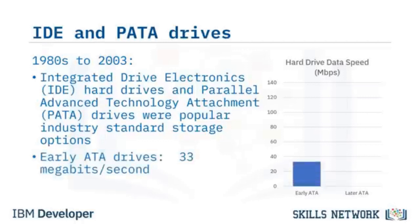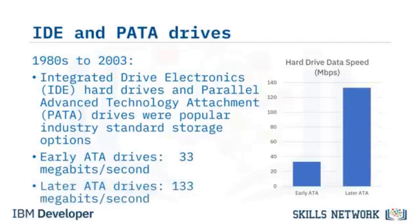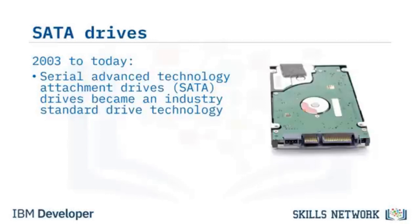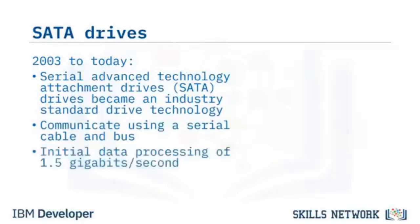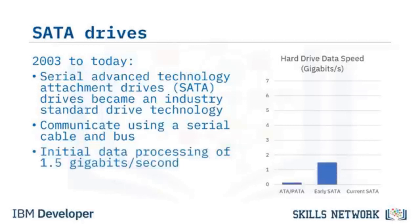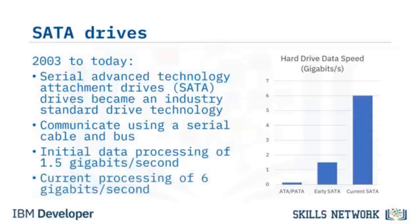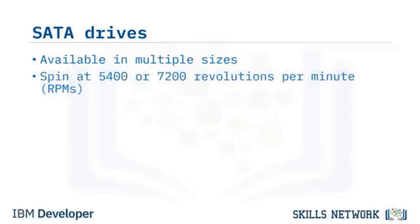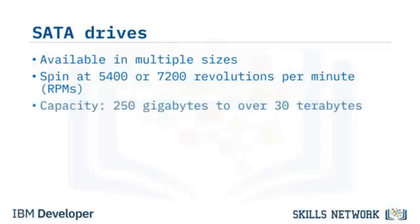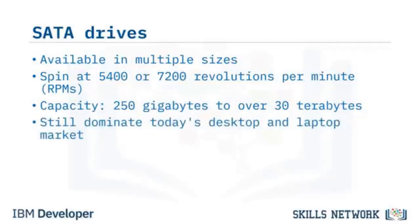Early ATA drives processed data at 33 megabits per second; later ATA drives processed data at 133 megabits per second. In 2003, Serial Advanced Technology Attachment, or SATA drives, which communicate using a serial cable and bus, advanced data processing to 1.5 gigabits per second — more than 10 times faster than an ATA. Currently, SATA drives can process data at 6 gigabits per second. SATA drives are available in multiple sizes, known as form factors, and typically spin at 5,400 or 7,200 RPM, with capacities from 250 gigabytes to over 30 terabytes.